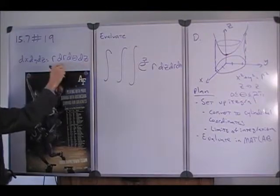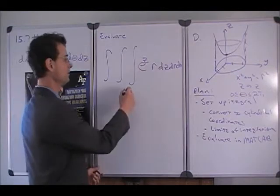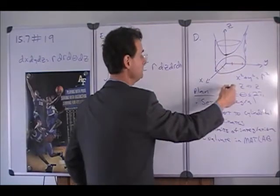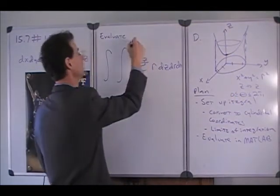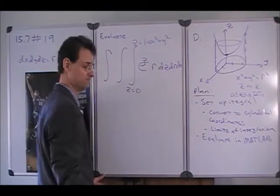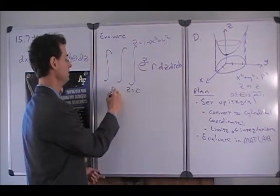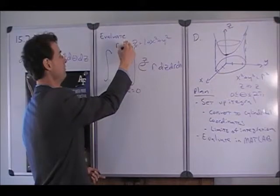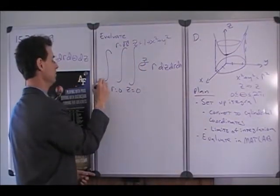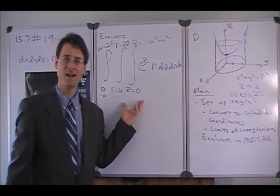And now we've commuted the dz to the beginning because we're going to integrate from z equals zero, our lower bound, up to our upper bound is z equals one plus x squared plus y squared. And then r goes from zero to the square root of five because that's where the boundaries of the cylinder are. And theta goes from zero to two pi. So everything's set up now.